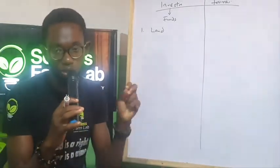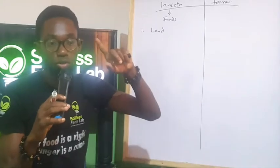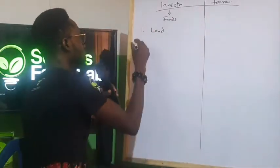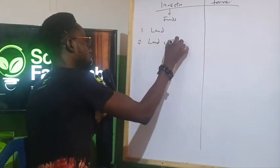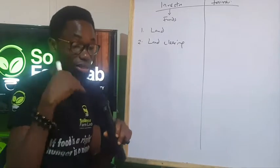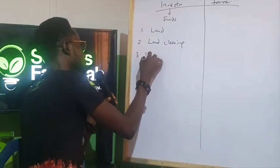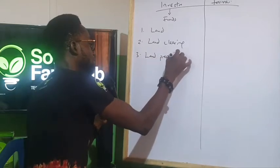Now let me state this clearly, I do not sell land, I do not sell land. So you buy your land, you can have that in your budget. Number 2 is land clearing, the clearing of the land. Number 3, land preparation.